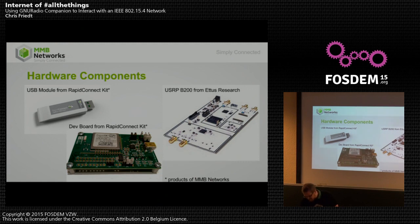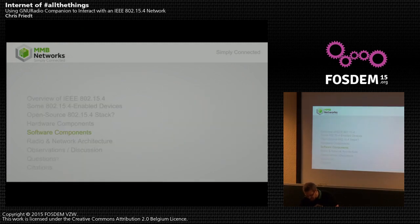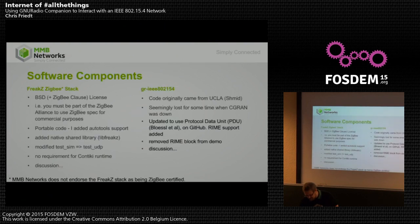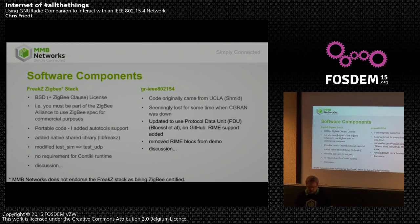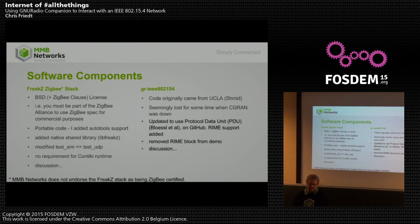The FreakZ test app structure is straightforward. It's BSD-licensed. If you want a commercial product, you need to pay royalties and become a Zigbee Alliance member — but you can use 6LoWPAN freely. The IEEE 802.15.4 GNU Radio block I used originated at UCLA. I found Bastion's repository, cloned it, took the RIME part out of the block, and fixed a couple of smaller issues.